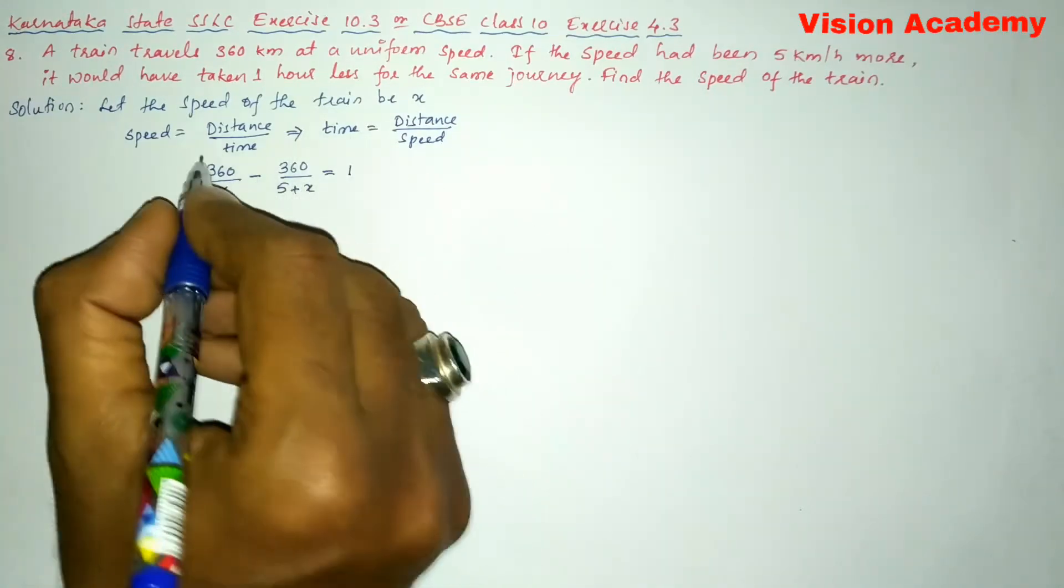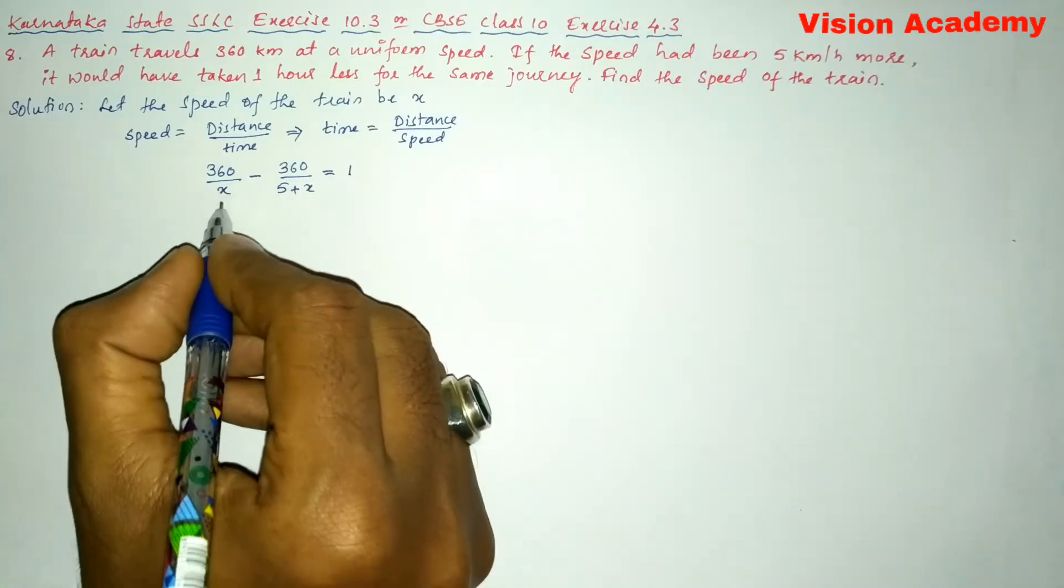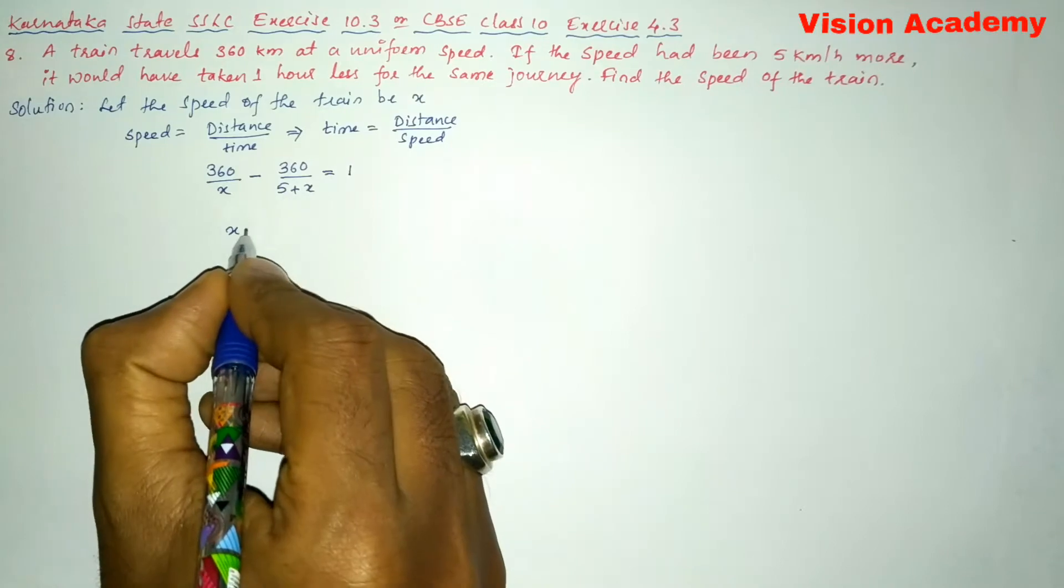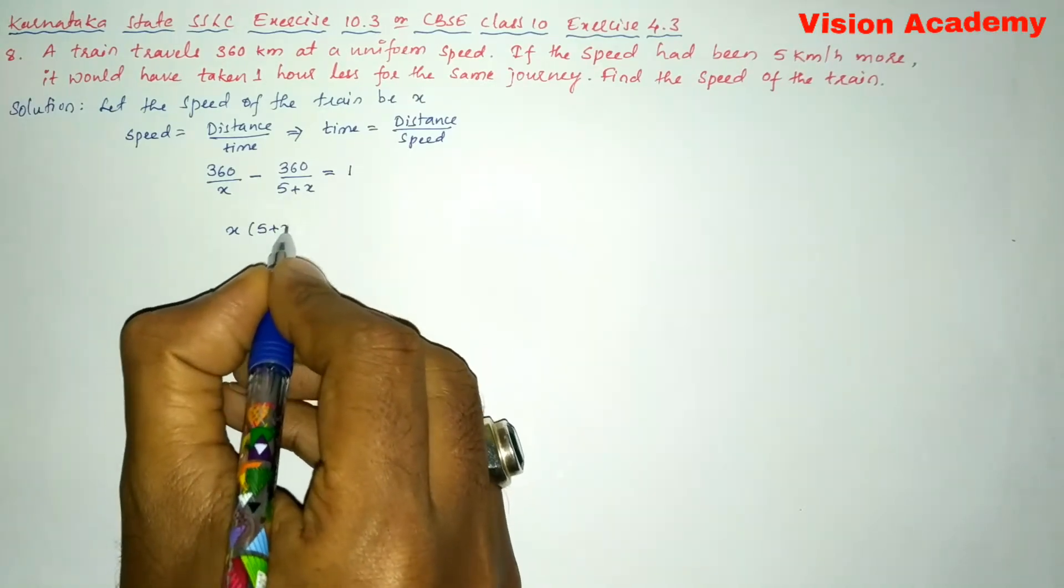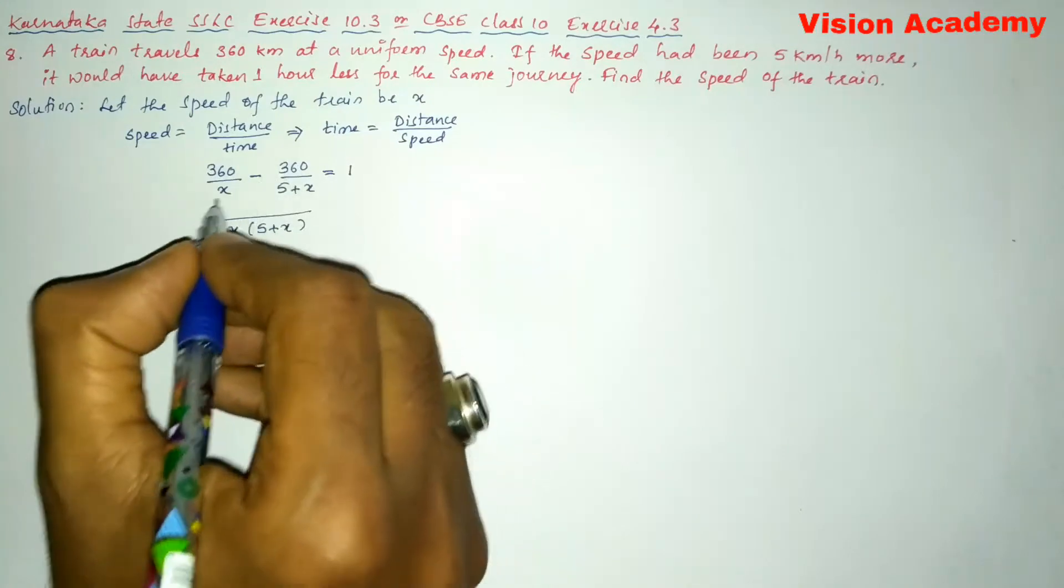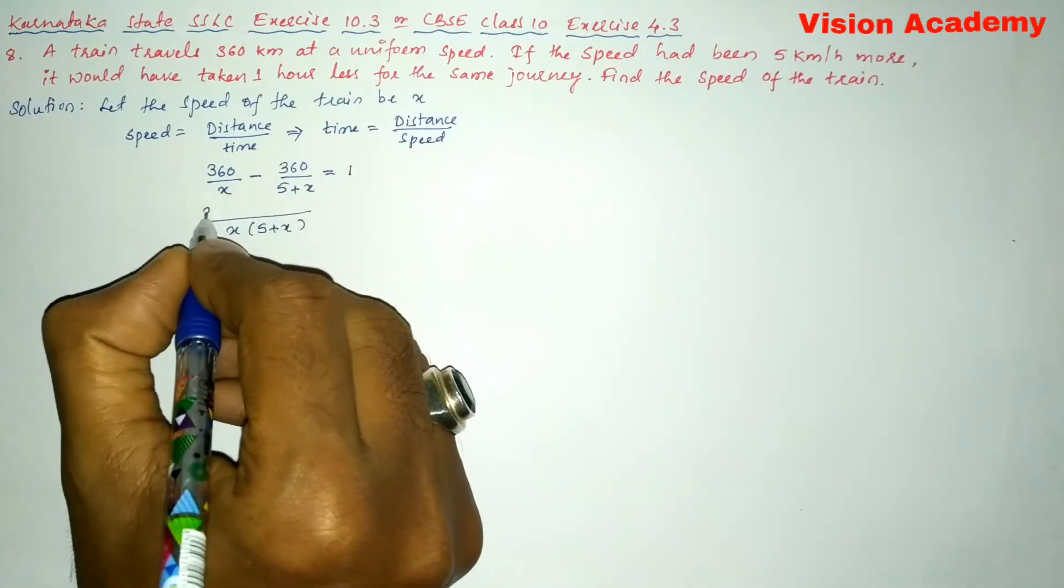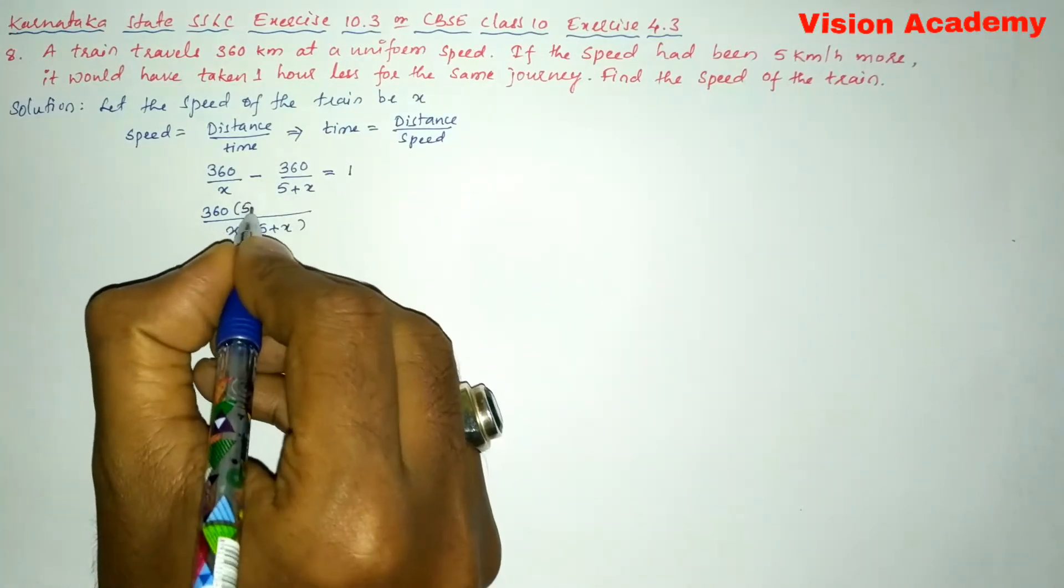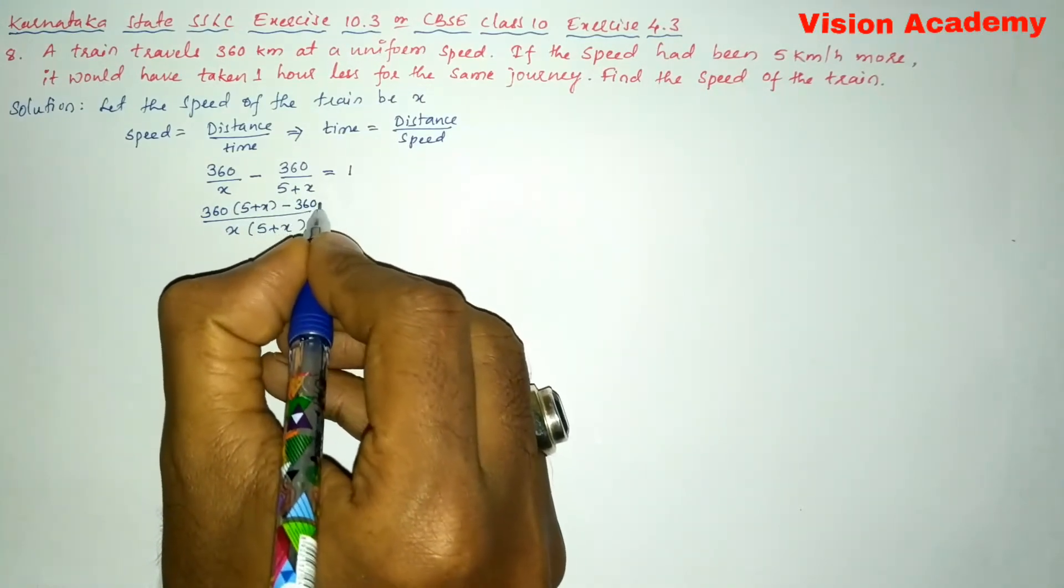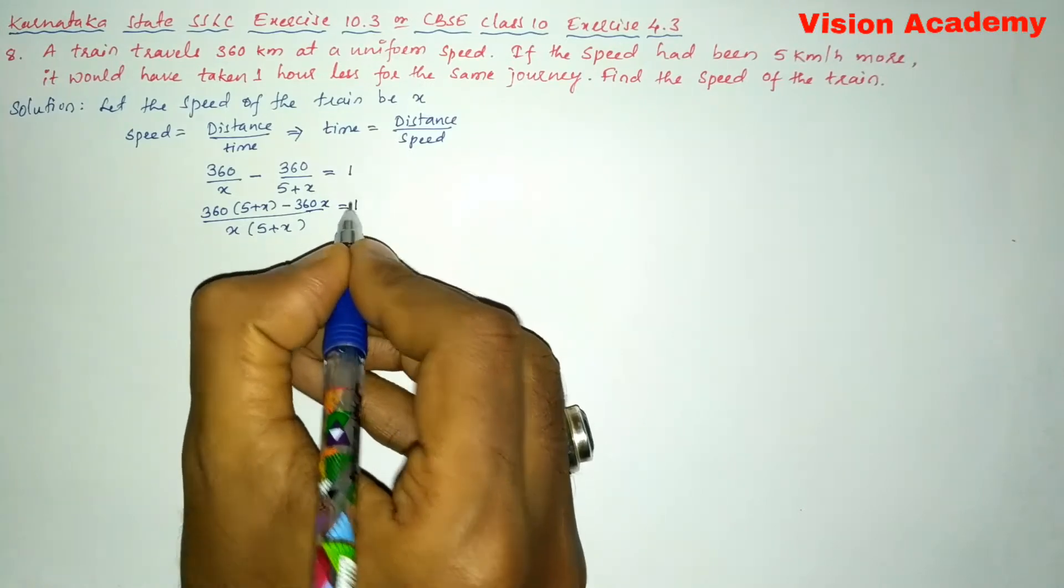Now we will cross multiply and we are going to get LCM of x and 5 plus x. So here x into 5 plus x is the LCM and we are going to cross multiply.